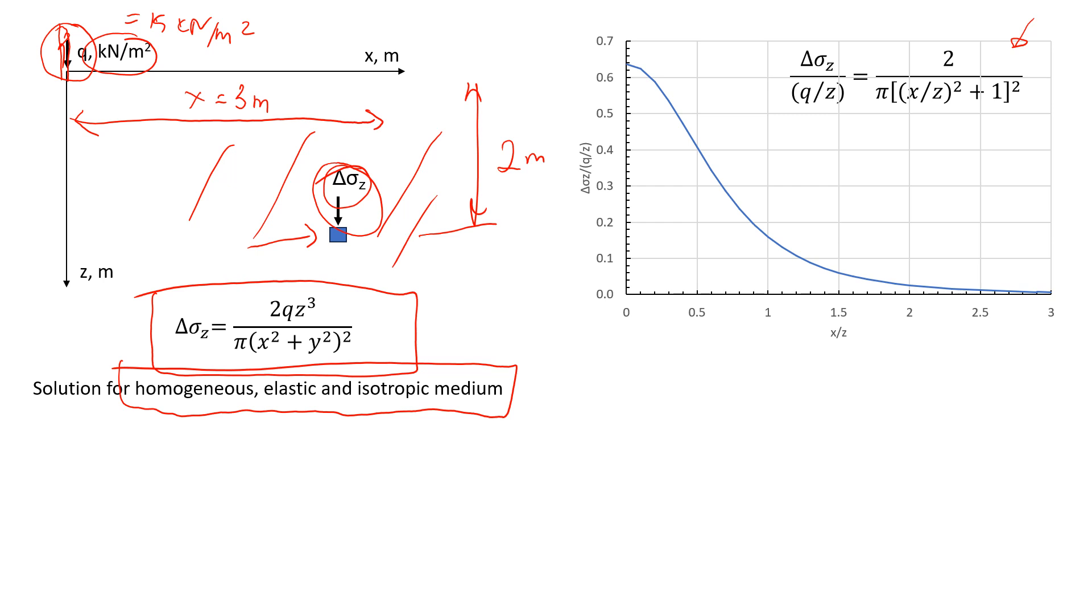Okay, so now let's see how we can solve this. I'm going to put the numbers in the formula to estimate the change in vertical stress, Δσz. We put 2 times q, which is 15 kilonewtons per square meter, times z cubed, where z is the depth of 2 meters.